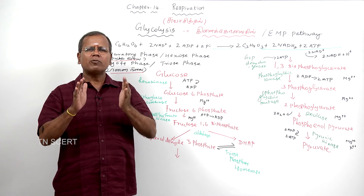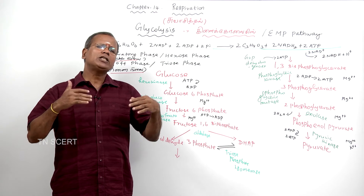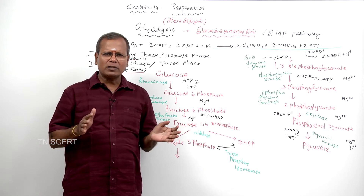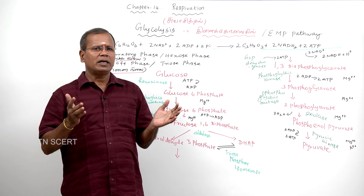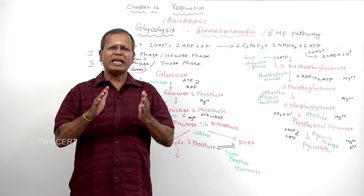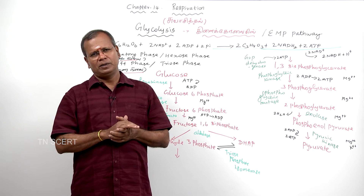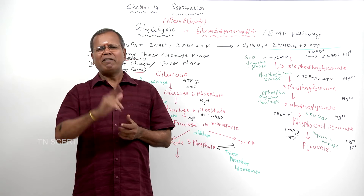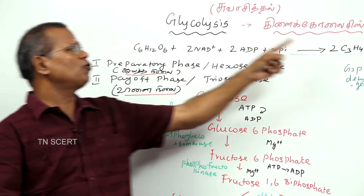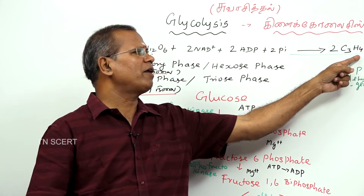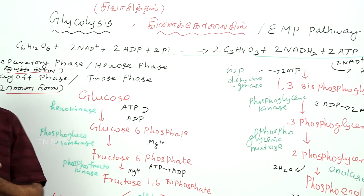Glycos means sweet, lysis means splitting, so glycolysis means sweet splitting. Conversion of one molecule of glucose into two molecules of pyruvic acid is said to be glycolysis.